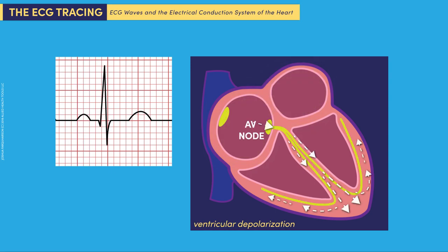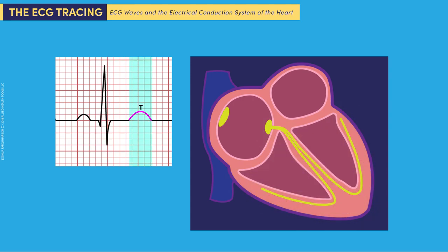Next, the impulse travels to the atrioventricular node and bundle branches where it activates the main pumping chambers called the ventricles and produces the big wave group in the middle known as the QRS complex. The T wave represents the recovery period when the impulse reverses and travels back over the ventricles.